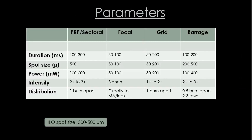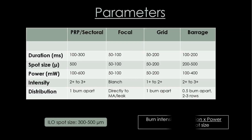The standard parameters for the four main types of laser are summarized in a reference table. PRP and sectoral laser have similar parameters, as does barrage laser. Focal and grid laser are done near the macula, so their parameters are always lower. When using the indirect laser ophthalmoscope, the spot size is constant and ranges between 300 to 500 microns. Burn intensity is the endpoint and is directly proportional to laser duration and power, and inversely proportional to spot size.